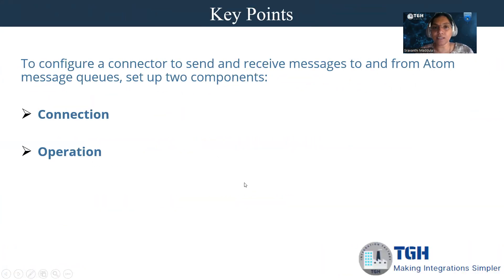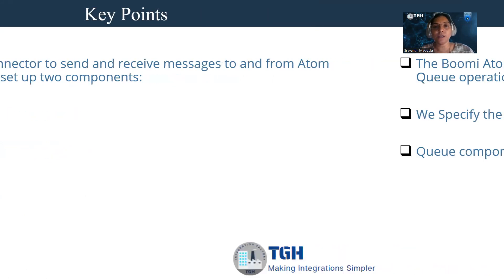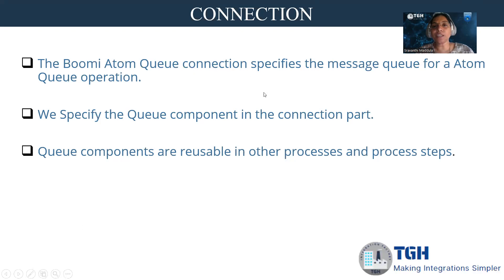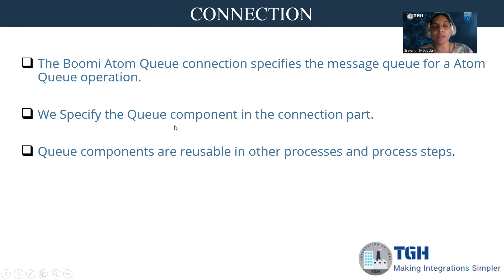To configure a connector, either to send or receive messages to or from the Atom Message Queue, we need to set up two components: connection and operation. The Atom Queue connection specifies the message queue for an Atom Queue operation, so we have to specify a queue component in the connection part. The queue components are reusable parts which can be used in other processes and processing steps.